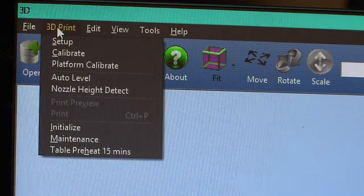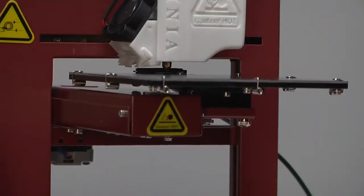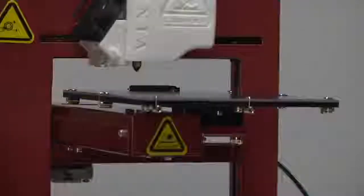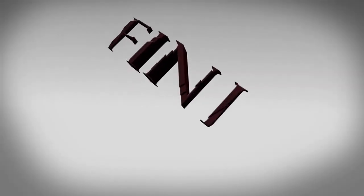Select nozzle height detect from the 3D print menu. The process of nozzle height detection will take about 20 seconds. The software will display the nozzle height. You are now ready to print your first model.